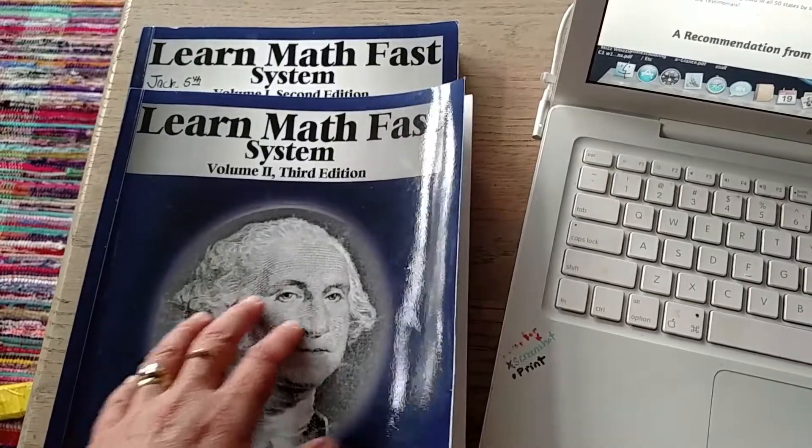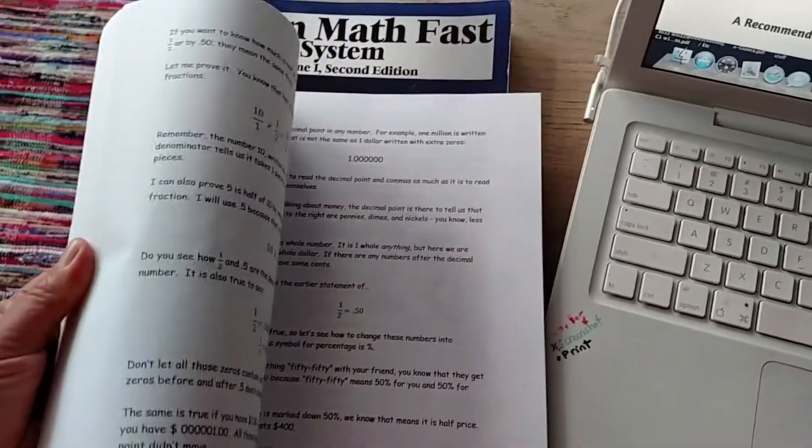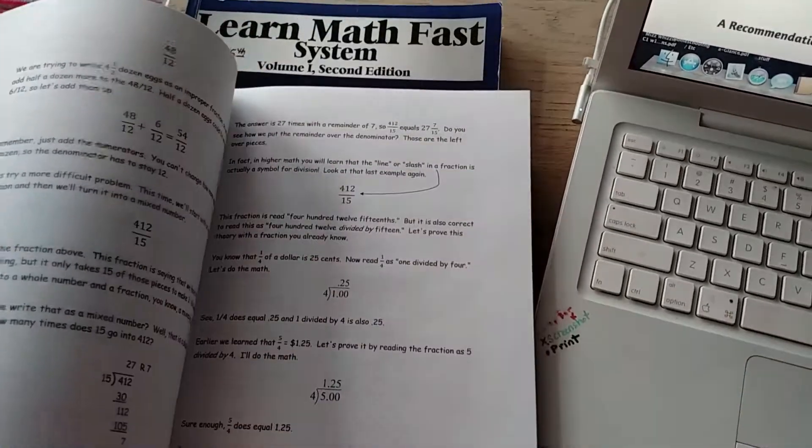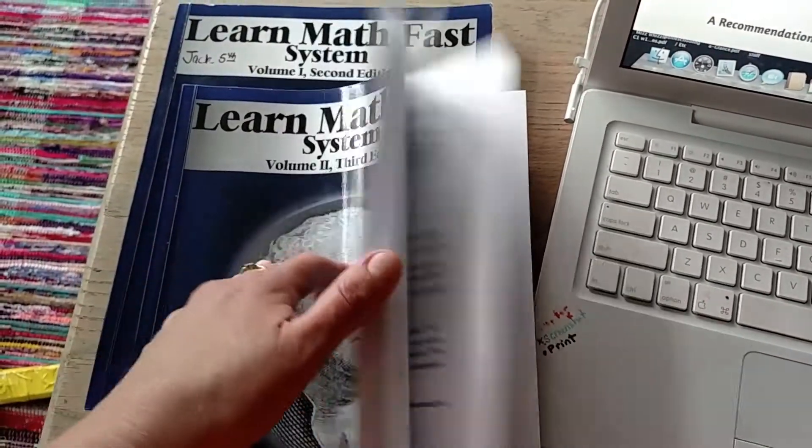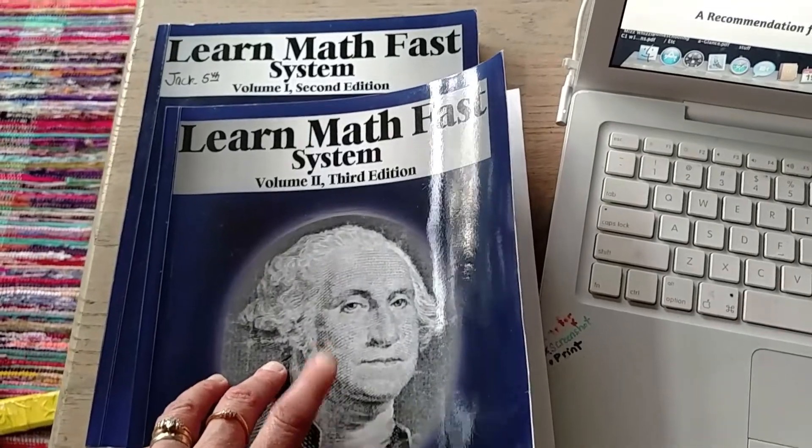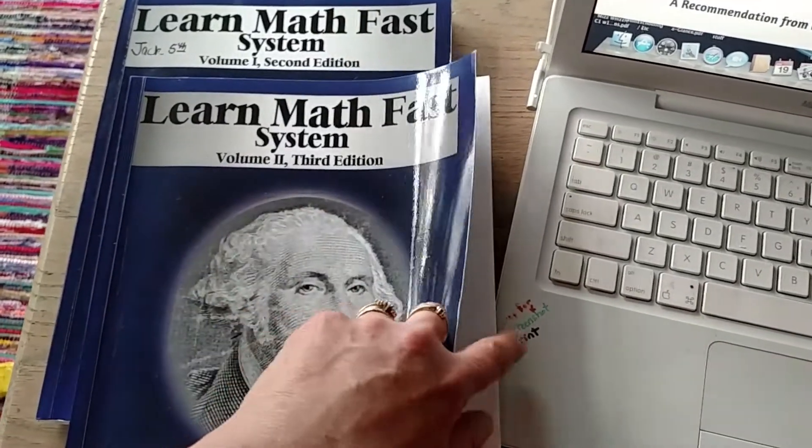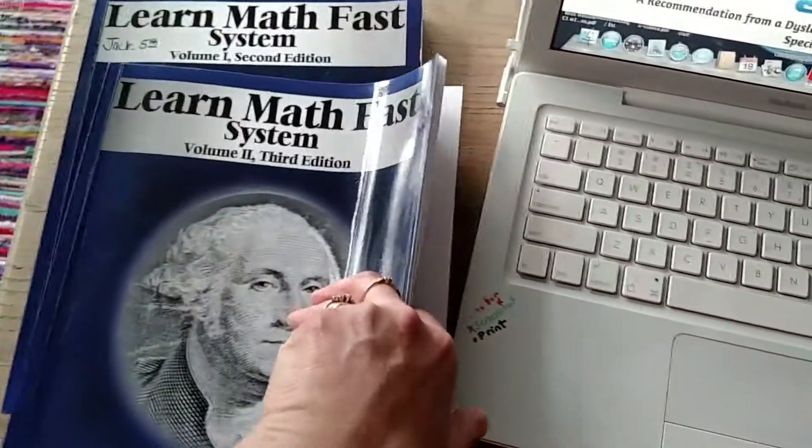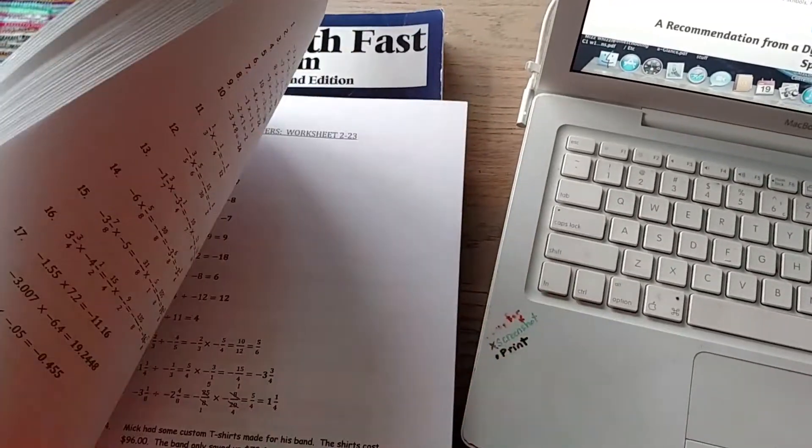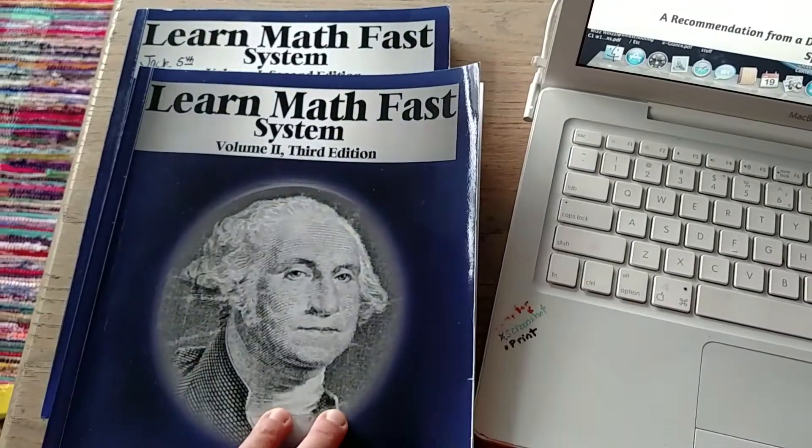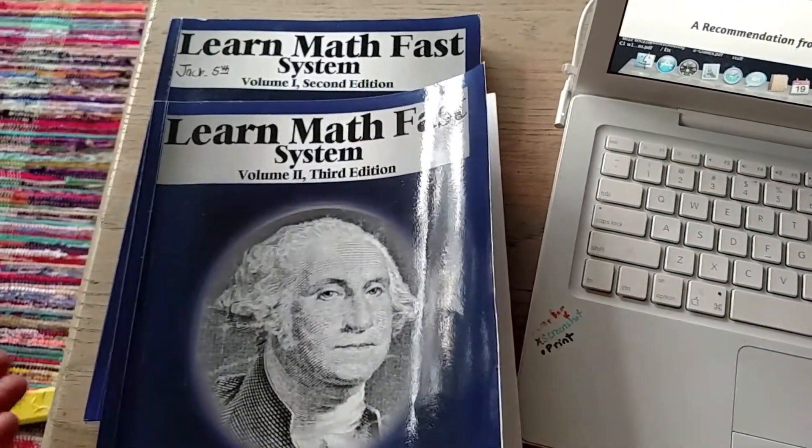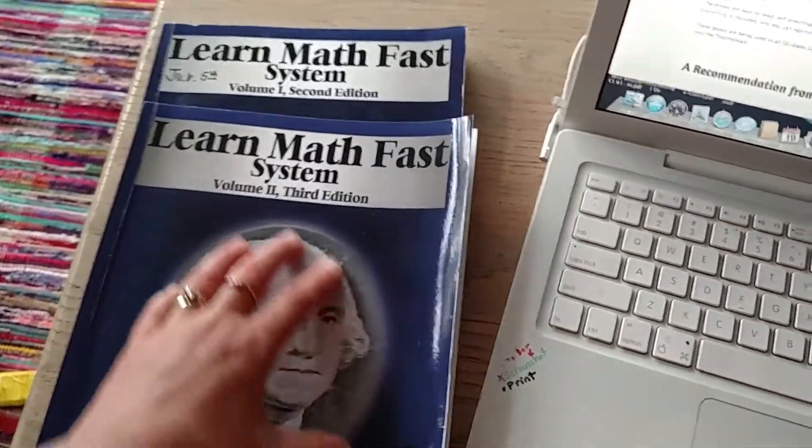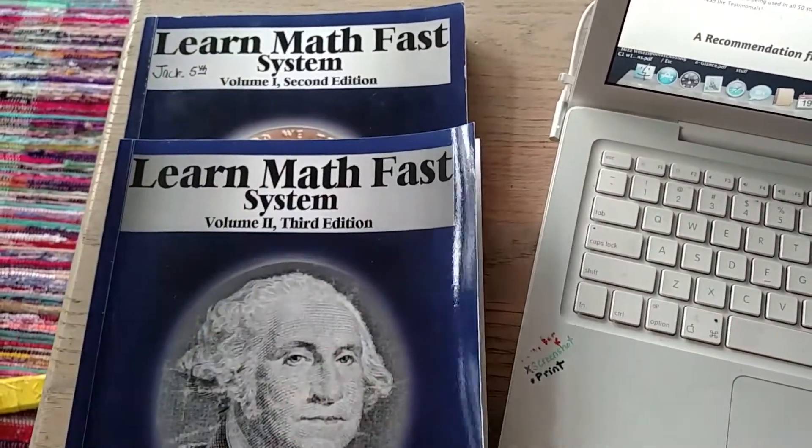And in these books you basically have like your lesson. And I have my son read through the instructions too. So you'll have your instructions and a worksheet to do. And then in the back you'll have your answer key and then I check his work. You could have your child check his own work if you wanted, but I have my oldest do that. But I'm not having my youngest do that right now.